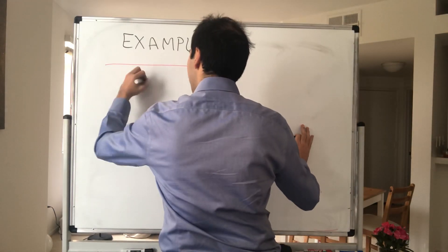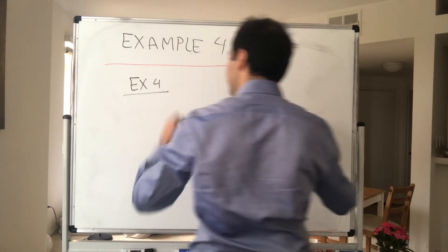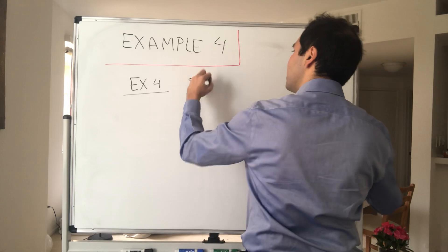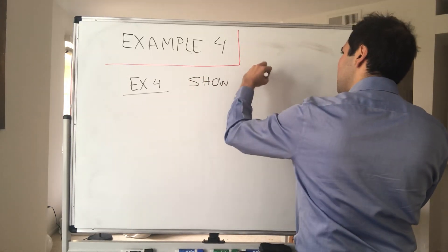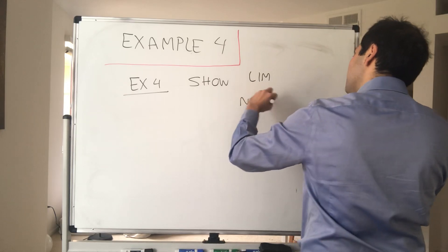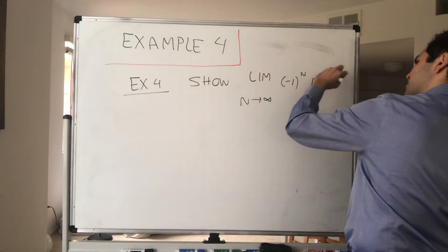So how would you show that a certain limit doesn't exist? Let's illustrate it with the case minus 1 to the n. Show that the limit as n goes to infinity of (-1)^n doesn't exist.